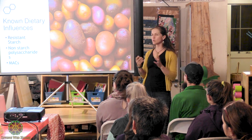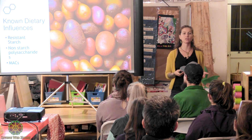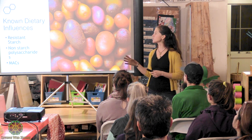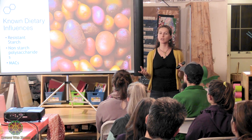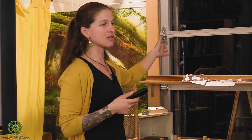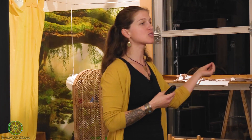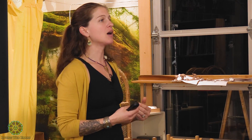I want to talk about some of the known dietary influences. Generally, carbohydrates are the type of fuel that these bacteria and microbiota are looking for. These bacteria want carbs they can't digest. Cows eat grass all day and turn into enormous creatures — we cannot do that. There's so much fiber and different resistant starches in grass that we can't actually utilize, which is why it would never be a suitable diet for a human.